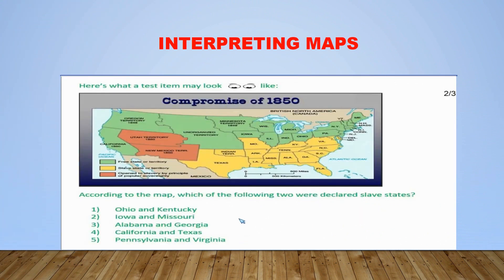So now, in order to answer questions that are asking you to read and interpret a map, you want to make sure that you familiarize yourself with your map key, and then be able to apply your map key to your map in order to understand what it is your map is trying to convey. So when we look at the map key here, we see that this map key is clearly color-coded. Here we have green, and green represents all of this section here. According to our map key, green represents those states and territories that were declared free.